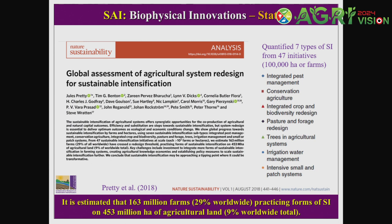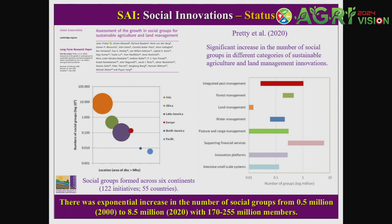Those numbers are from five years ago and are likely significantly higher now. He also led a paper on why adoption happened. What was observed was an exponential increase in social groups from year 2000 to 2020 — from half a million groups in 2000 to 8.5 million in 2020. The social revolution behind the adoption of these technologies was very key. That's why in G by E by M by S, the S — social science — is very critical.